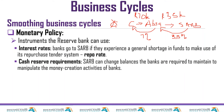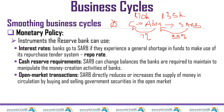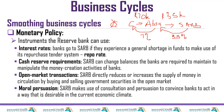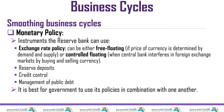Another instrument is cash reserve requirements. The South African Reserve Bank can change the balances that banks are required to maintain to manipulate the money creation activities of banks. For grade 12, just knowing what it is is enough. Then there are open market transactions: the Reserve Bank directly reduces or increases the supply of money in circulation by buying and selling government securities in the open market. The next one is moral persuasion: the SARB uses consultation and persuasion to convince banks to act in a way that is desirable in the current economic climate.